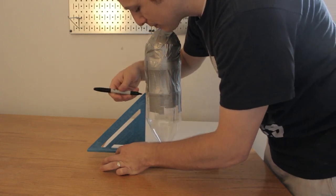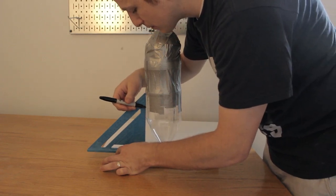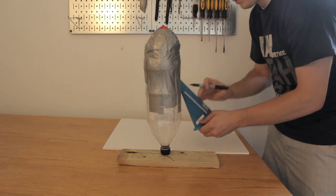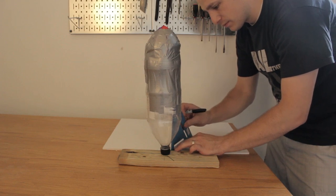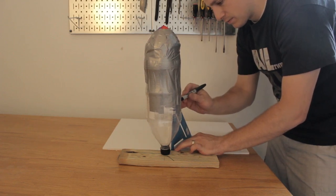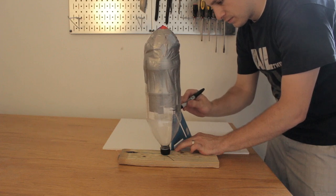And I'm going to hold my rocket still and transfer this line to the rocket. I'm going to do this for all three of our marks. And with that measurement, or with those markings on our rocket, we are now ready to move on to our fin design.